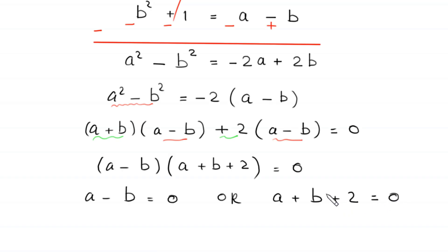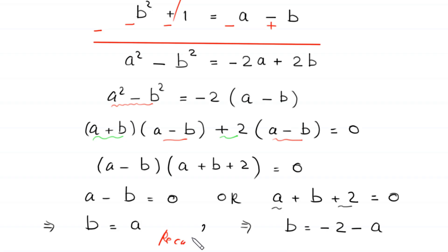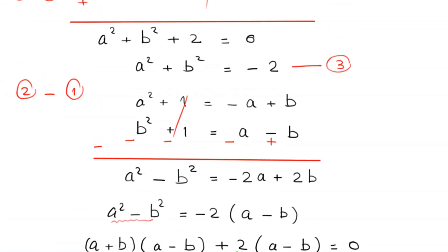From this factored form, either a minus b equals 0, which implies b equals a, or a plus b plus 2 equals 0, which implies b equals negative 2 minus a. We now use these two cases with equation number 3: a squared plus b squared equals negative 2.